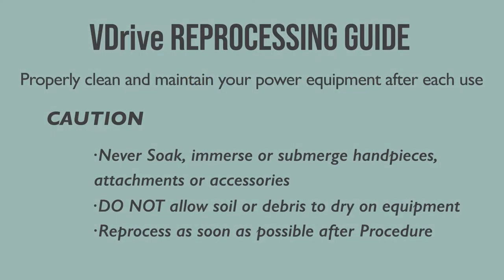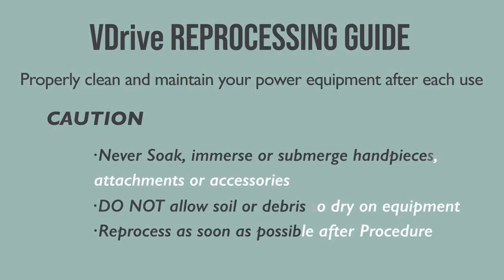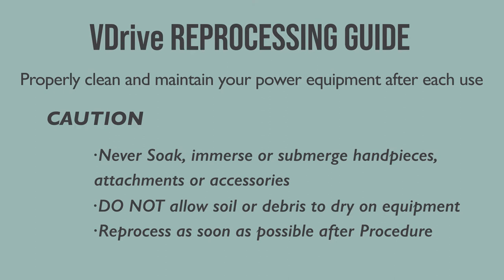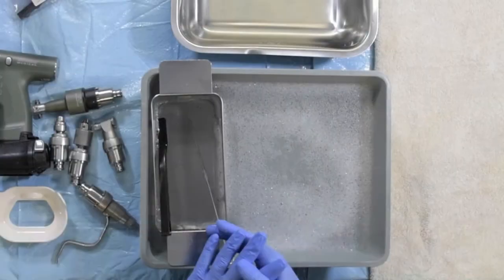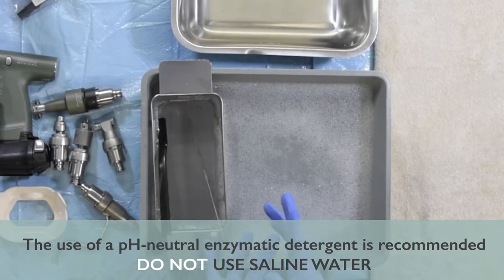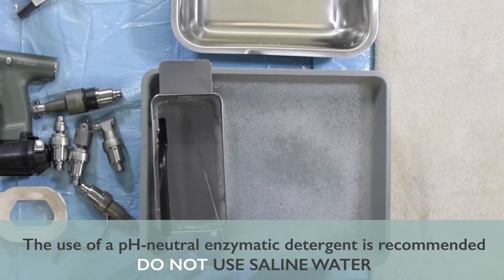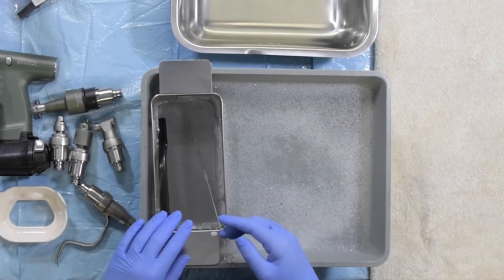Today we'll review the recommended process for cleaning and prepping your aseptic v-drive for sterilization. All of your items should be dirty when they come out of the OR, and then you'll prep your solution for cleaning using a pH neutral enzymatic cleaner and warm water along with your tools for cleaning.